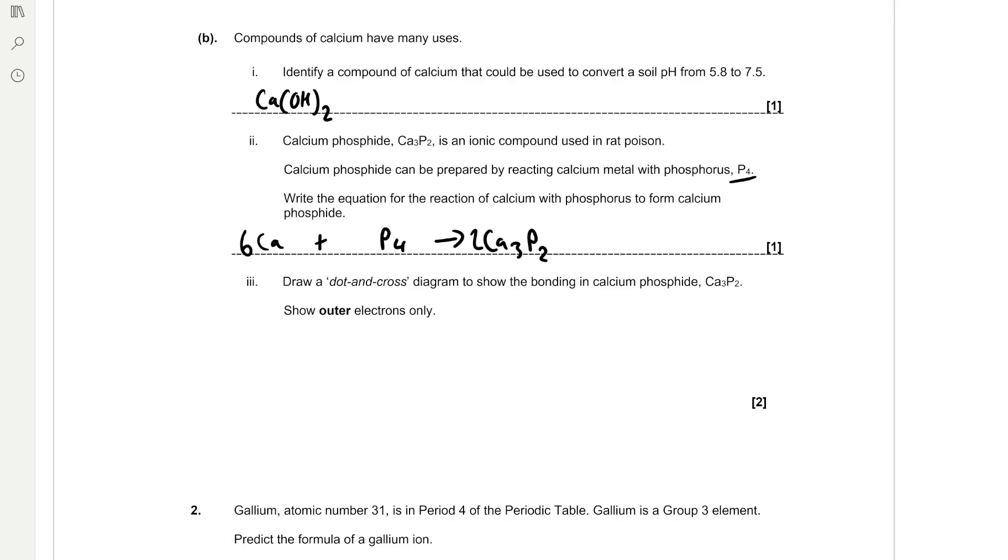Draw a dot and cross diagram to show the bonding in calcium phosphide Ca3P2. Show outer electrons only. So it's an ionic compound. So we're just going to have a Ca2 plus ion with an empty outer shell so we don't need to draw any shells for calcium. And we have three of those ions. For phosphorus we have gained three electrons from the calcium, forming two three minus ions.